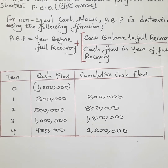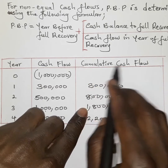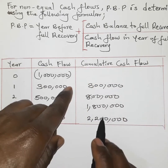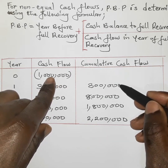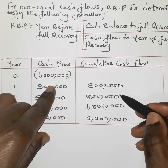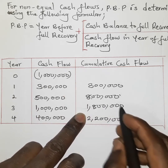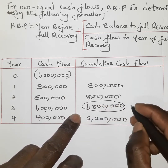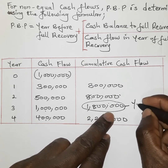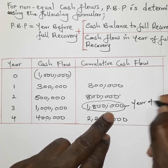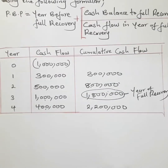The year of full recovery is that particular year whose cumulative cash flows first encompass the whole one million that was invested. As you can see, eight hundred thousand is less than one million, but one point eight million is more than one million. So the one million invested will be fully recovered within year three, because that cumulative amount can account for the full investment.